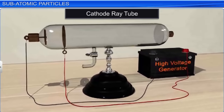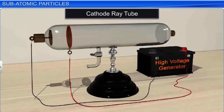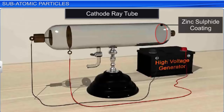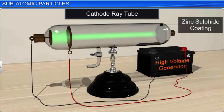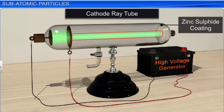To further study this current, Crookes punctured the anode inside the cathode ray tube and coated the glass behind the anode with a fluorescent material such as zinc sulfide, then repeated the experiment. This time, he noticed a bright spot on the coating behind the anode, which confirmed two things: the current consisted of invisible rays of particles, some of which could pass through the perforated anode, and these rays were emitted from the cathode and moved toward the anode. These rays were named cathode rays.